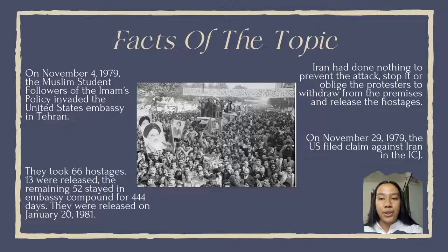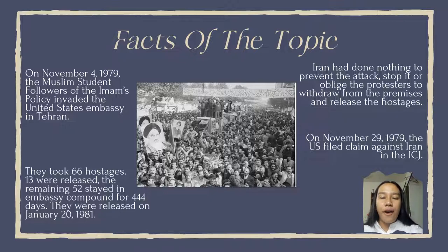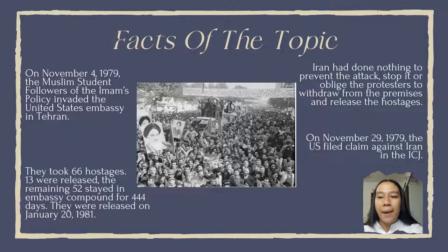The militants damaged the embassy and destroyed embassy documents. U.S. consulates in Tabriz and Shiraz were also seized. The conduct of the militants could not be directly attributed to the Iranian state; however, the state had done nothing to prevent the attack, stop it, or oblige the protesters to withdraw from the premises and release the hostages. The militants took 66 hostages, mostly diplomats and embassy employees, and released 13 people a few days later, but 52 hostages remained in the embassy compound for 444 days.